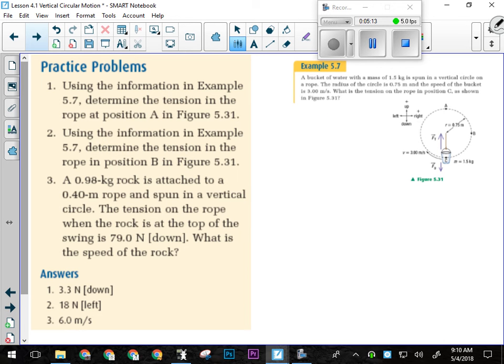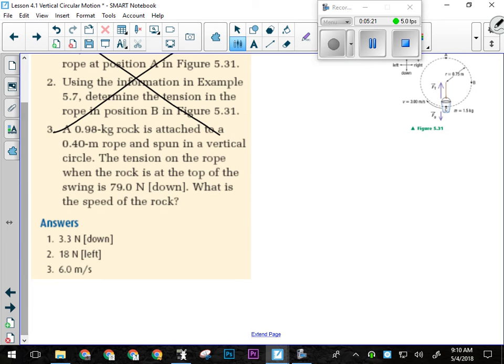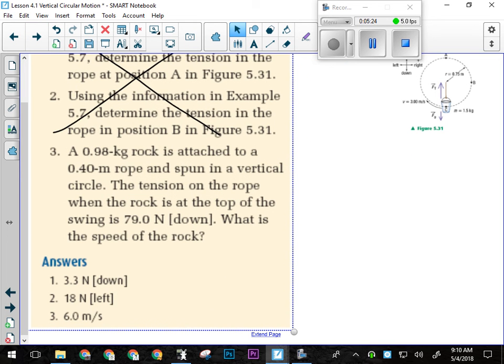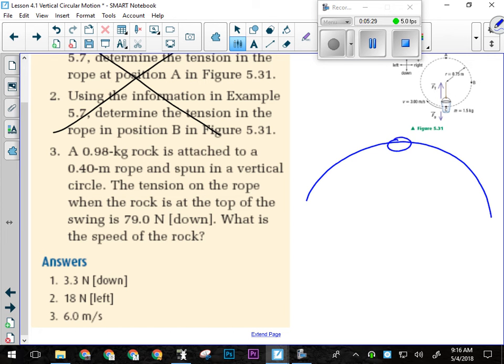I want you guys to try just number three. Don't worry about one and two for now. Just try number three. All right, so in number three, the situation we're dealing with is this. Here's the rock, here's the string attached to it. This is equivalent to being on the inside of a roller coaster's loop, not on the outside, on the inside. So we have gravity pulling in, and we have the tension in the rope also pulling in. We have no forces out in this situation.